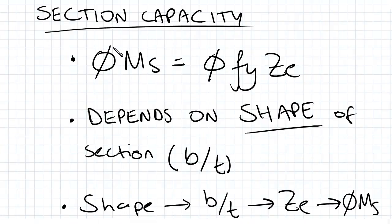So this is the section capacity - the design section capacity with the Phi factor. Phi MSX, that could be in terms of X or Y, so MSX or MSY depending on whether we're bending about the X or Y axis. What really dictates it is the shape of the beam through the b/t ratio, whether it is slender, compact, or non-compact as we've learned, and how that influences the effective section modulus Ze.